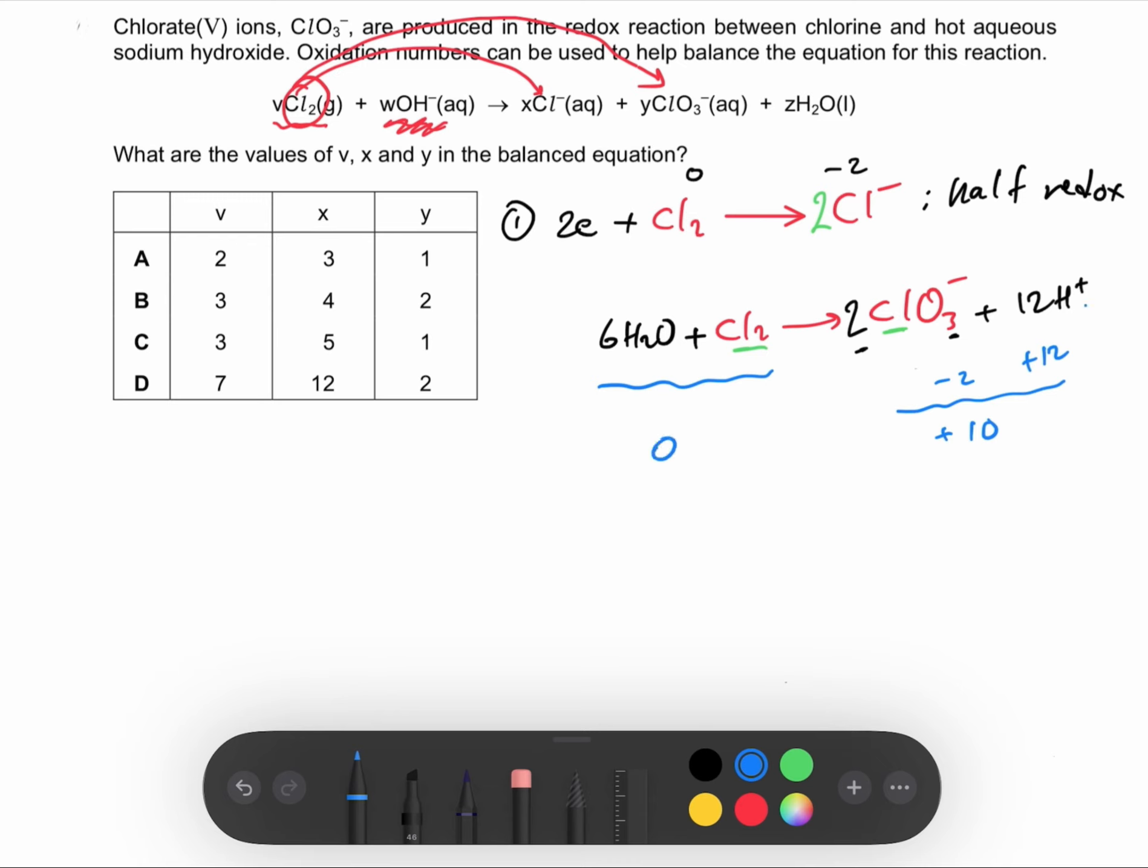At this point we didn't finish—we have to combine those two equations together. We just noticed that we have 2 electrons here and 10 here. We have to make those electrons equal to each other, and we can do this by multiplying this equation by 5 to change them to 10 electrons. After multiplying by 5, it becomes 10 electrons plus 5Cl₂ gives 10Cl⁻.